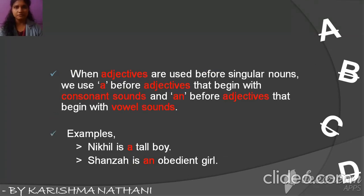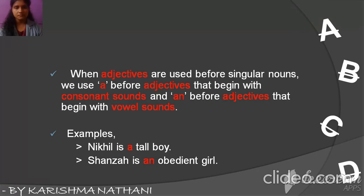When adjectives are used before singular nouns, we use A before adjectives that begin with a consonant sound and AN before adjectives that begin with vowel sounds. For example, Nikhil is a tall boy — tall starts with a consonant, so A tall. Shahnaz is an obedient girl — obedient starts with a vowel, so AN obedient. Tall and obedient are adjectives.